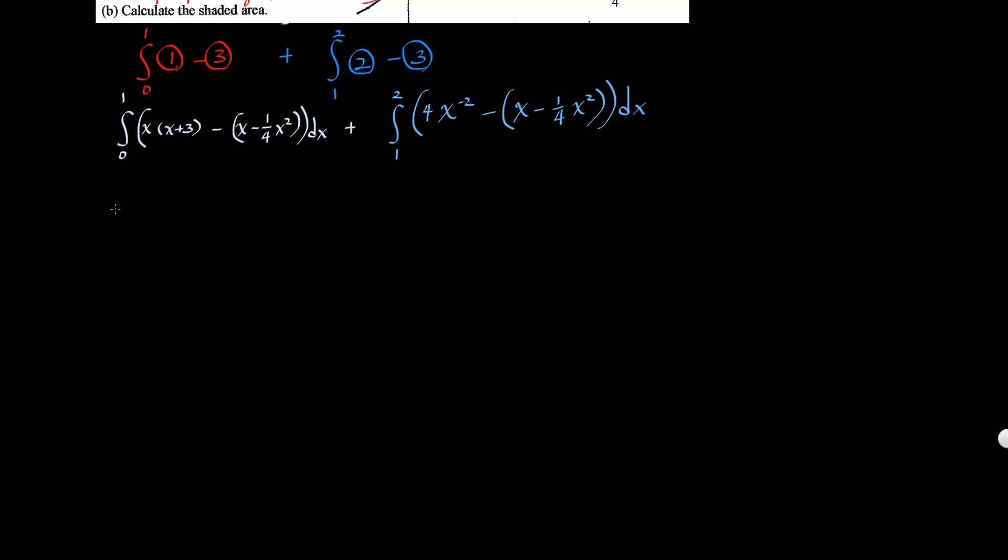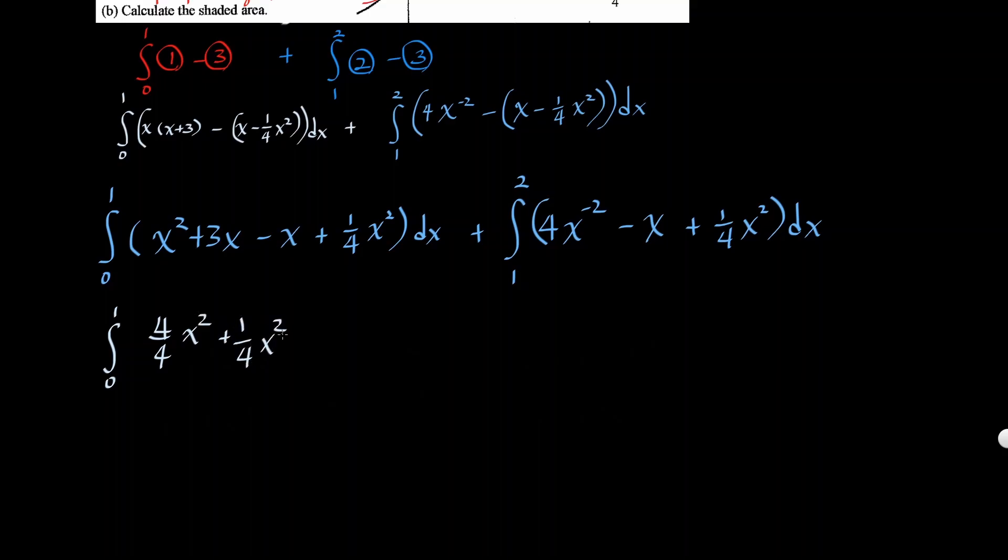Before I integrate it, let's simplify what's inside the parentheses. So from 0 to 1, it's going to be x squared plus 3x. Distribute negative minus x plus 1 fourth x squared. Everything dx. Plus what's on the right side will be 1 to 2. 4x negative second power minus x plus 1 fourth x squared. Everything dx. Let's combine the like terms, 0 to 1. That will be 4x squared plus 1 fourth x squared plus 2x everything dx. Well, let me just do it now. So 4 plus 1 over 4 will be 5 over 4. So it will be 5 over 4x squared.